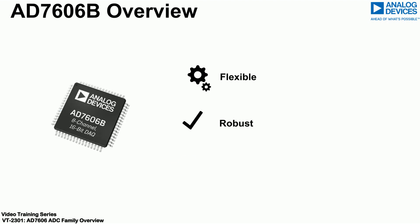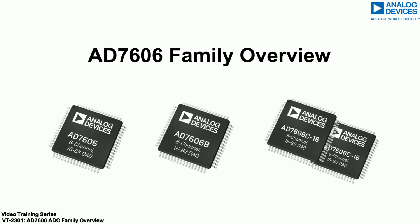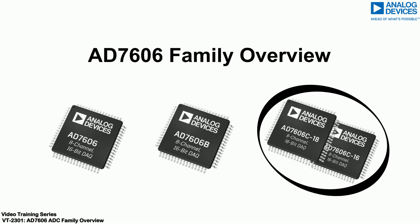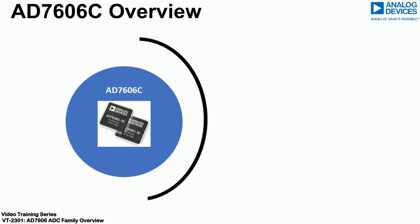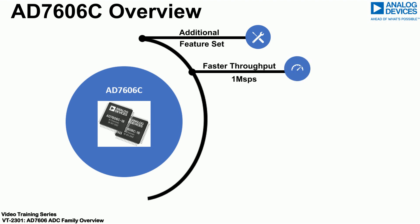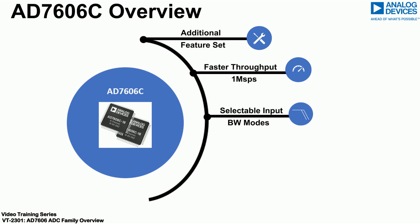The year 2020 brought the next generation of the family: the AD7606C-18 and the AD7606C-16, 18-bit and 16-bit respectively. These offer even more flexibility through software selectable modes that enable adoption across even more application areas. These devices offer even faster throughput rates, selectable high input bandwidth modes settling up to 10 times faster, as well as additional input ranges.